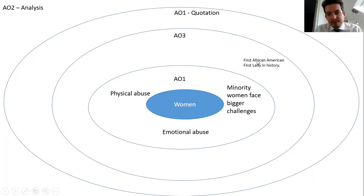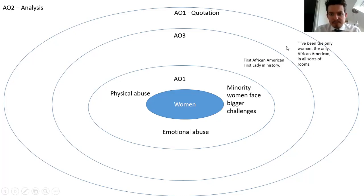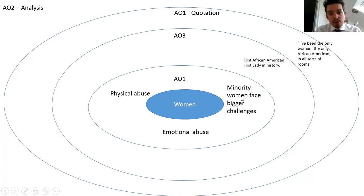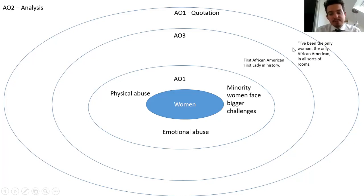In the next circle, you follow that along and need a quotation to support the idea. For instance: 'I've been the only woman, the only African-American in all sorts of rooms.' That's a nice quotation that links to minority women facing bigger challenges — that's your AO1 — but it also links to some AO3 context as well.